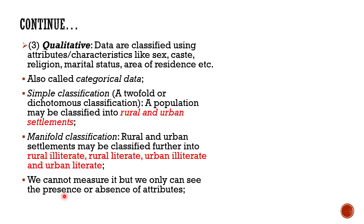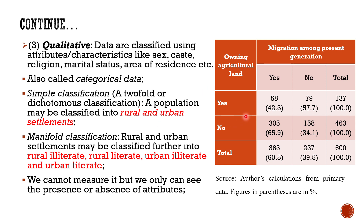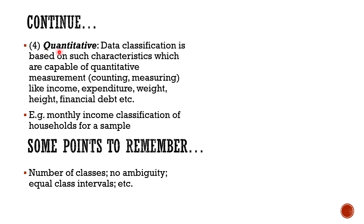With qualitative data, we cannot measure attributes — we can only see the presence or absence of attributes. For example, we can have data on migration among the present generation and whether they own agricultural land or not. This gives a two-by-two matrix with totals, where owning agricultural land and whether a person is migrating are the two attributes being studied.